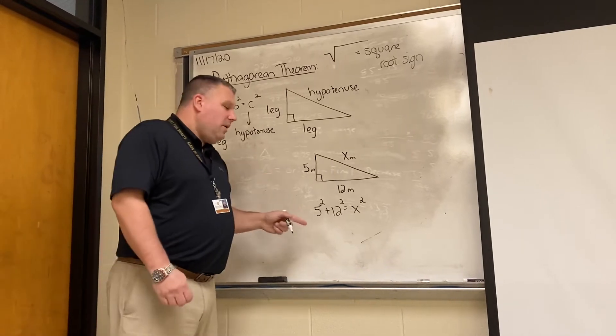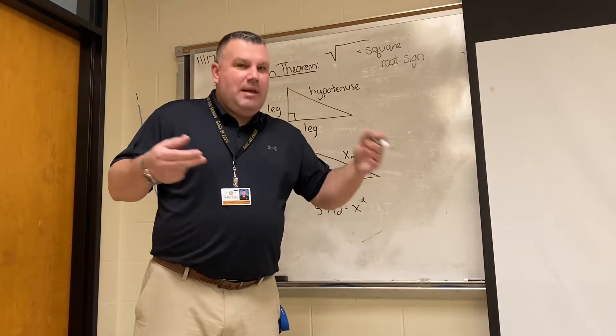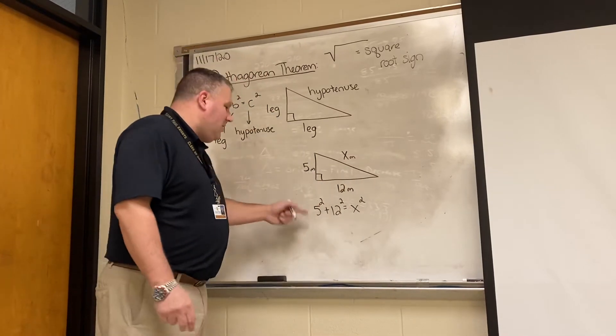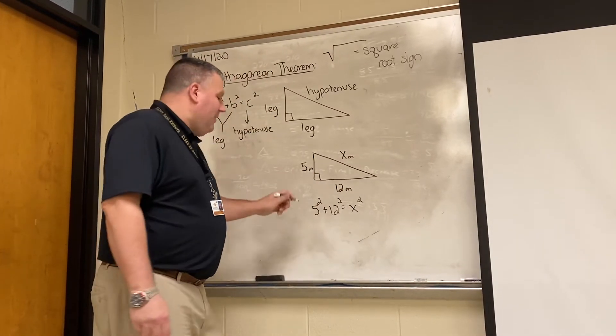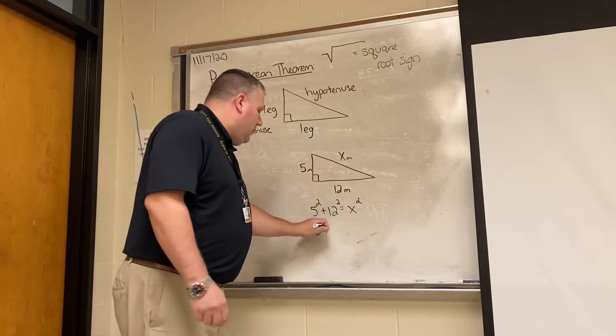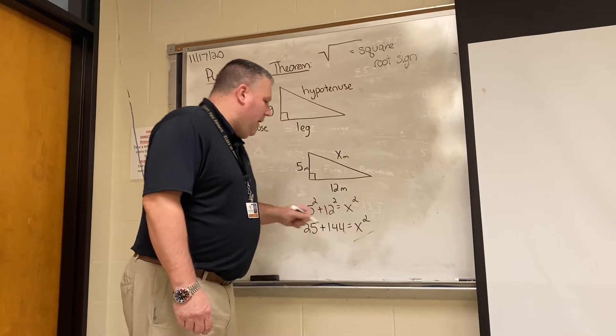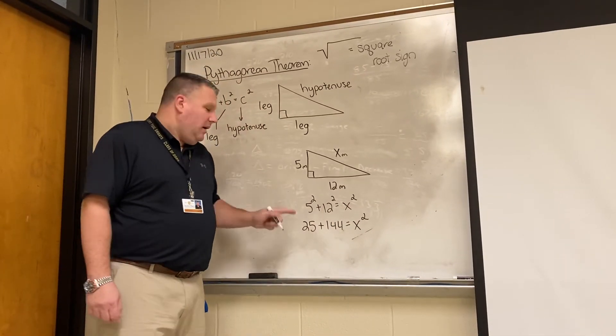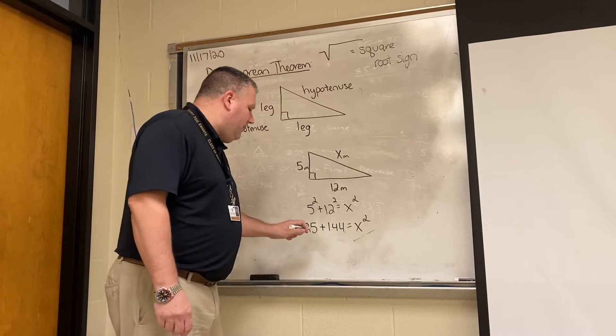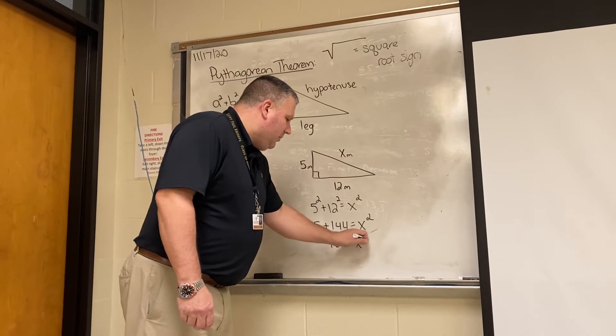Now, when you square something, that is the number times itself, not the number times 2. So 5 squared is not 10. 5 squared, in fact, is 25. Plus 12 times 12, which is 144, is equal to x squared. Now we need to add these. 25 plus 144 is 169, is equal to x squared.